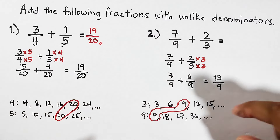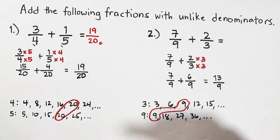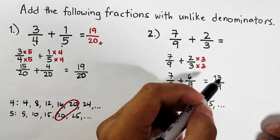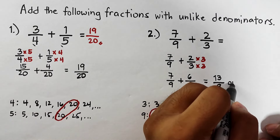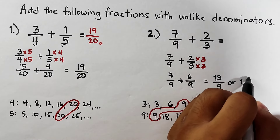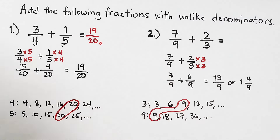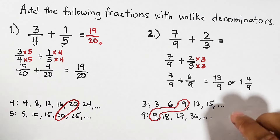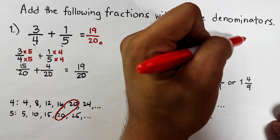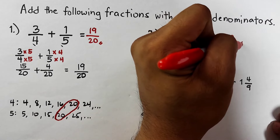Our fraction thirteen over nine is an improper fraction, so we can convert it into a mixed number. Thirteen over nine can be expressed as one and four over nine. So the possible answers are thirteen over nine or one and four over nine.